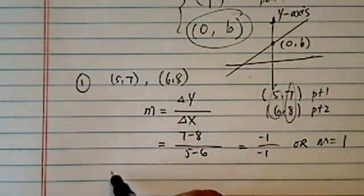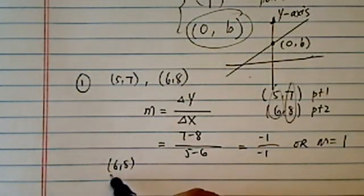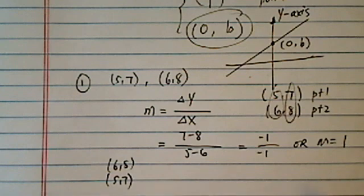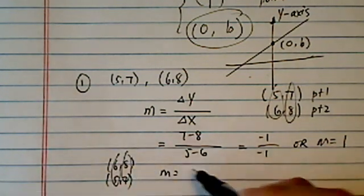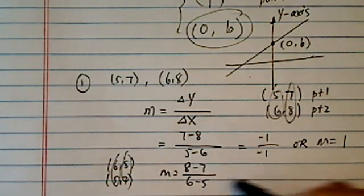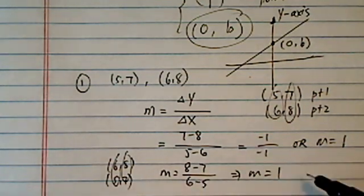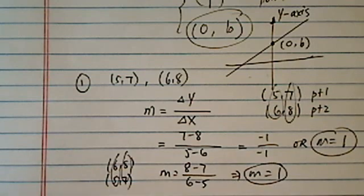Now, if you didn't believe this, let's say you choose the other way around, 6 and 8, 5 and 7. Then m is equal to, change in y, 8 minus 7, 6 minus 5. m is still positive 1.